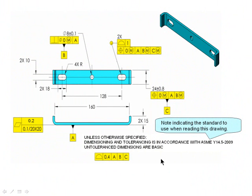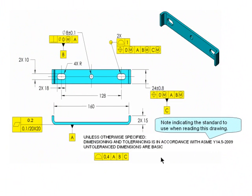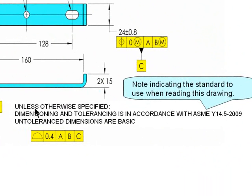Here's an example of how to state the standard that the drawing is made to. Down here in the notes, it says that dimensioning and tolerancing is in accordance with ASME Y14.5-2009. So all of the rules that are found in this Y14.5 standard apply to this drawing. Notice it says 'in accordance with' — I like that a lot better than 'based on,' which I see on many drawings.